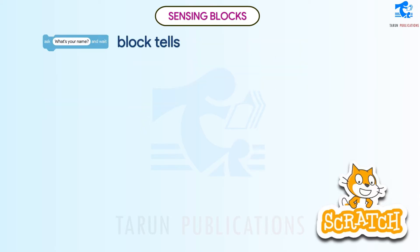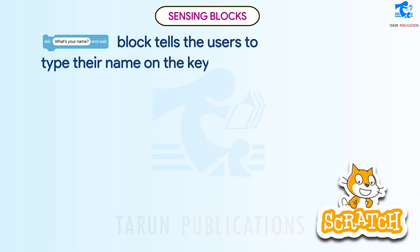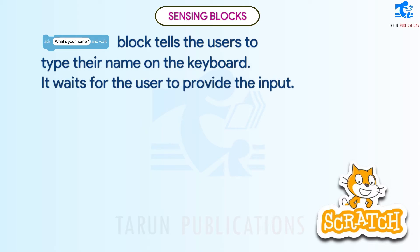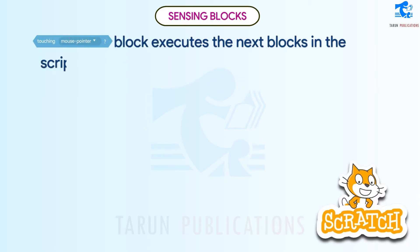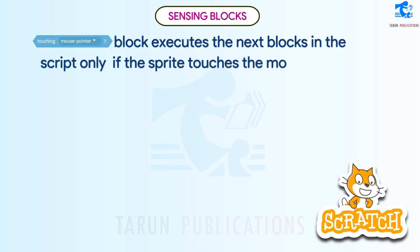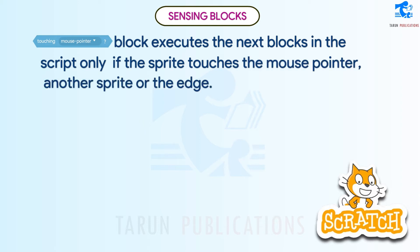One block tells users to type their name on the keyboard and waits for the user to provide the input. Another block executes the next blocks in the script only if the sprite touches the mouse pointer, another sprite, or the edge.